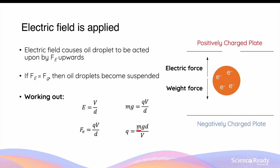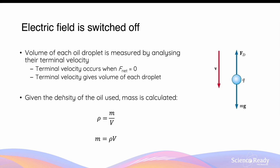In this expression, M is the mass of the oil droplet. G is the acceleration due to gravity, assumed to be 9.8 meters per second squared. D is the distance between the two plates, which can be measured by Milliken. And V is the voltage between the two plates, which can also be measured by Milliken. Therefore, the charge of the oil droplet can be calculated by simply finding out the mass of the oil droplet. So the question is, how did Milliken determine the mass of each oil droplet?